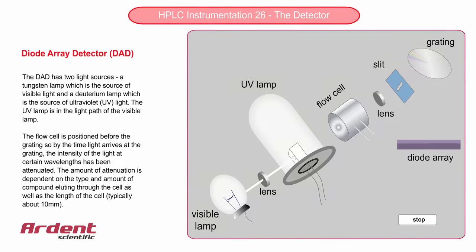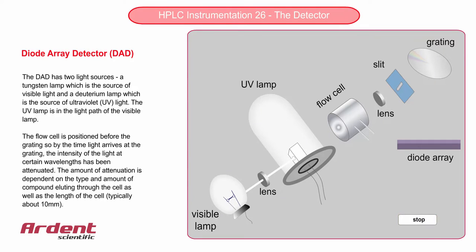The diode array is also a common detector, an advance on the variable UV detector. The difference with this type of detector is the flow cell is now located before the diffraction grating. Therefore, by the time the light has reached the grating, certain wavelengths of the light have already been absorbed by the component which is eluting through the cell. And these wavelengths will be dependent on the chemistry of the component itself.